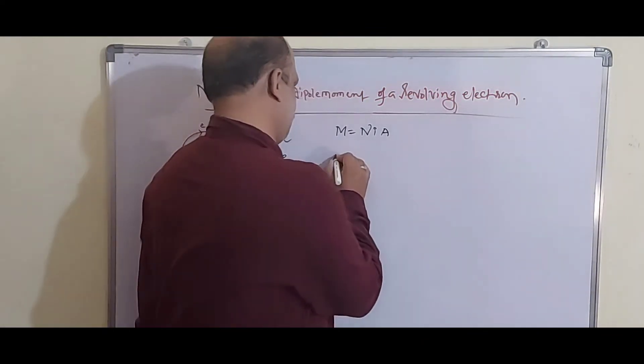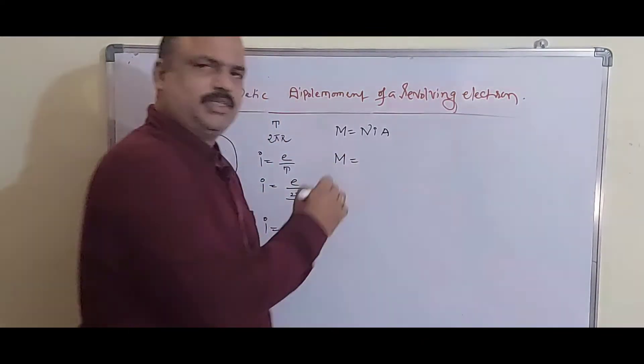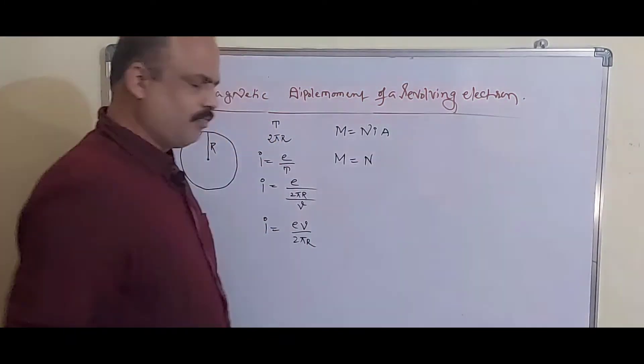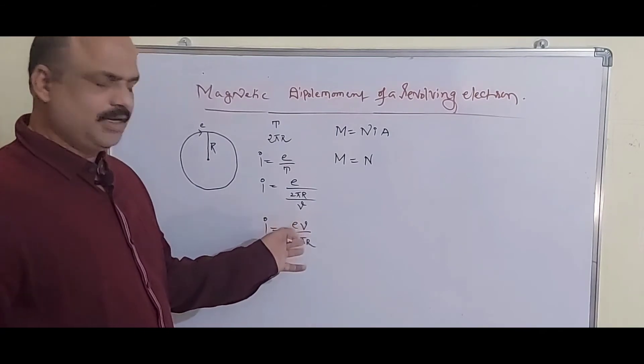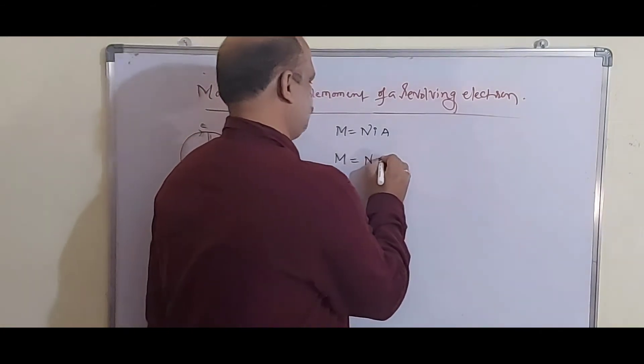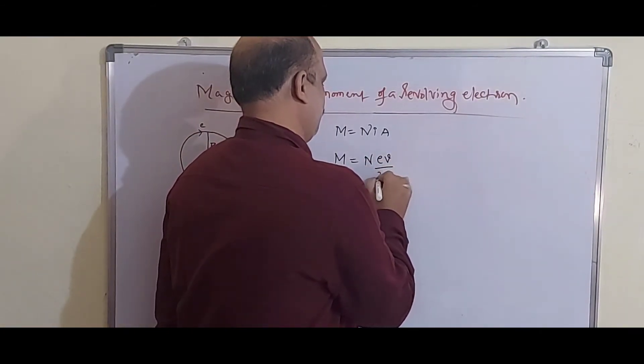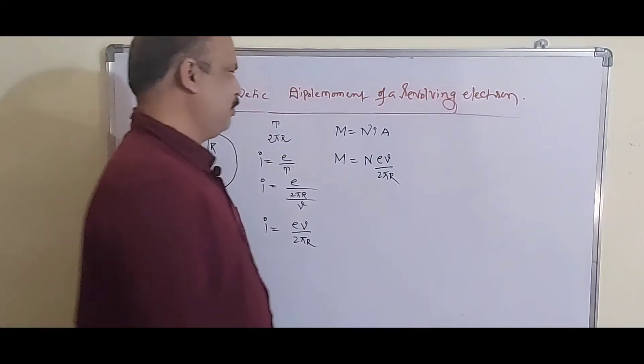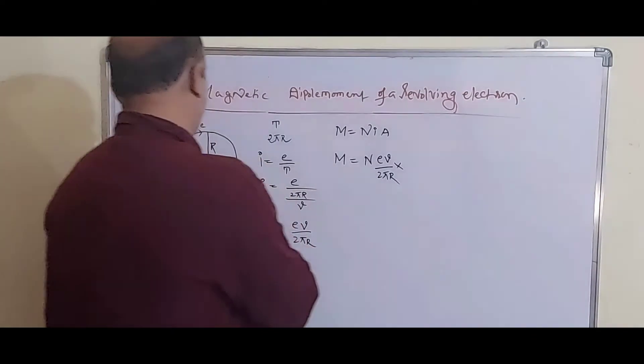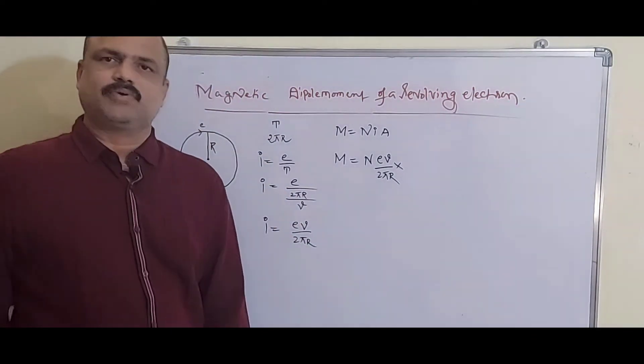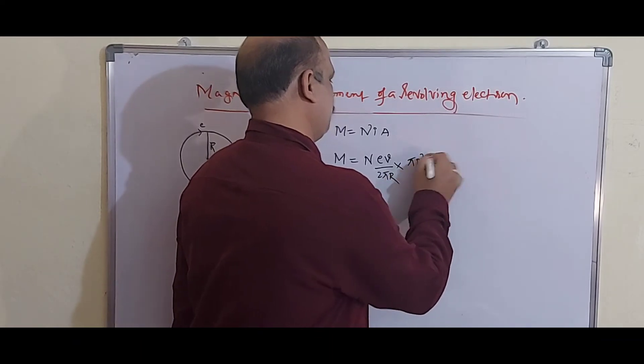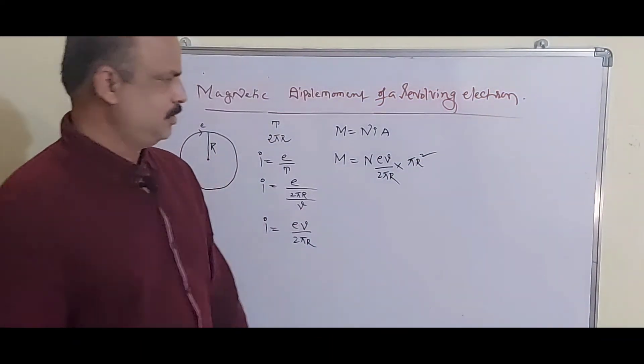Now, the magnetic moment of this revolving electron is N times I, which is Ev by 2πr, times the area which is πr².